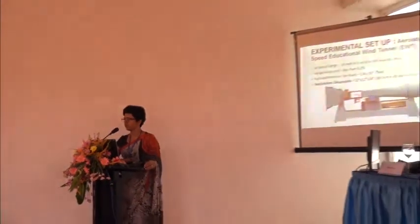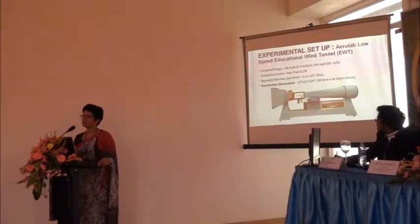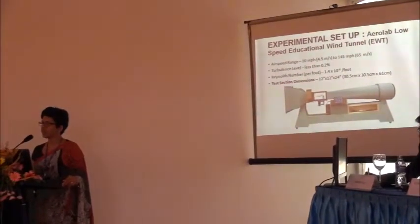Many research studies have been done like this on similar wind tunnels, but not on this B tunnel. The experimental setup is the low-speed educational B tunnel available at KU, which is manufactured and designed by AeroLab USA. It can handle flow speeds ranging from 4.5 to 65 meters per second. The turbulence level is less than 0.2 percent. The test section has a length of 2 feet, a height of 1 foot, and a width of 1 foot. This is an open-loop wind tunnel which has a closed test section.